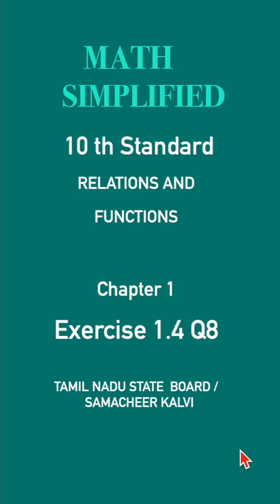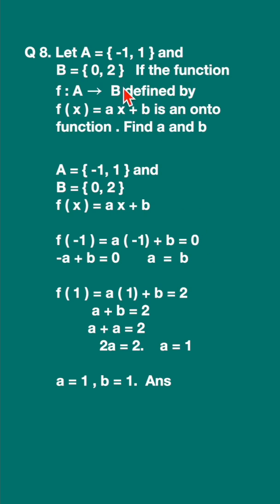Standard exercise 1.4 question 8. Let A = {-1, 1} and B = {0, 2}. These are the two sets. If the function f: A → B defined by f(x) = ax + b is an onto function, find a and b.